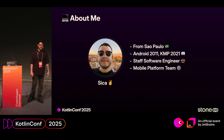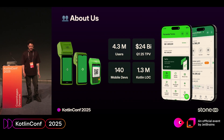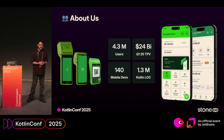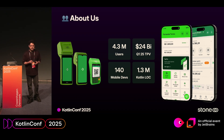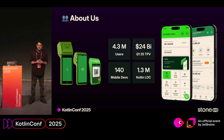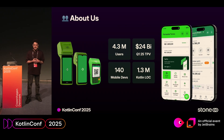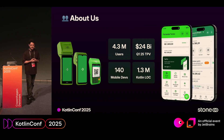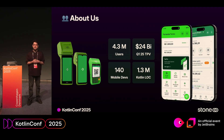Before we dive in, I would like to give you a little more context about Stone. We aim to be the best friend of Brazil entrepreneurs, not only providing payment solutions, but also credit, investments, loans, and so on. We have over 4.3 million users. Last quarter, we processed over $24 billion in payments. We have 140 mobile devs and 1.3 million lines of code, and we have two applications: the Tone app on the left and the Stone app on the right.